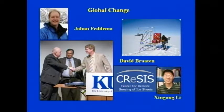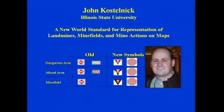If people have silly states-and-capitals impressions of geography, the most convincing thing would be to go to a geography department — you could do it here at George Washington University. Walk down the hall, knock on a professor's door, and ask them what they do. In my department, you would find people working on global change, genocide. And one student, John Kostelnik, completed his Ph.D. and went to Illinois State University having written the world standard for representation of landmines, minefields, and mine actions on maps.